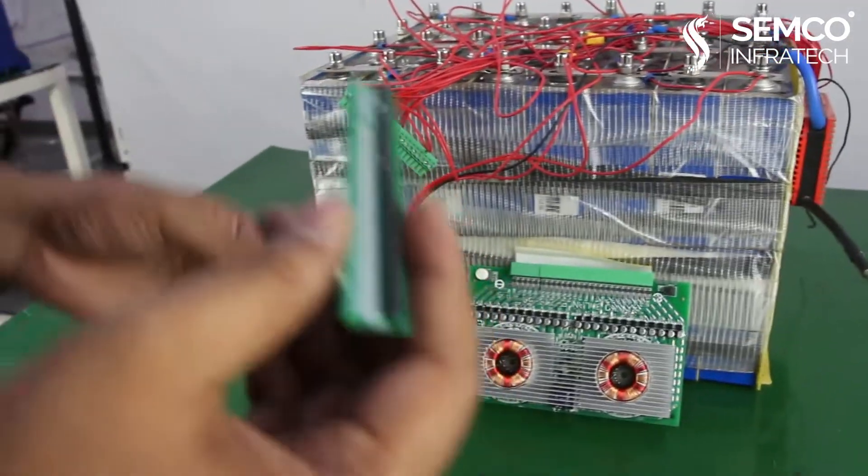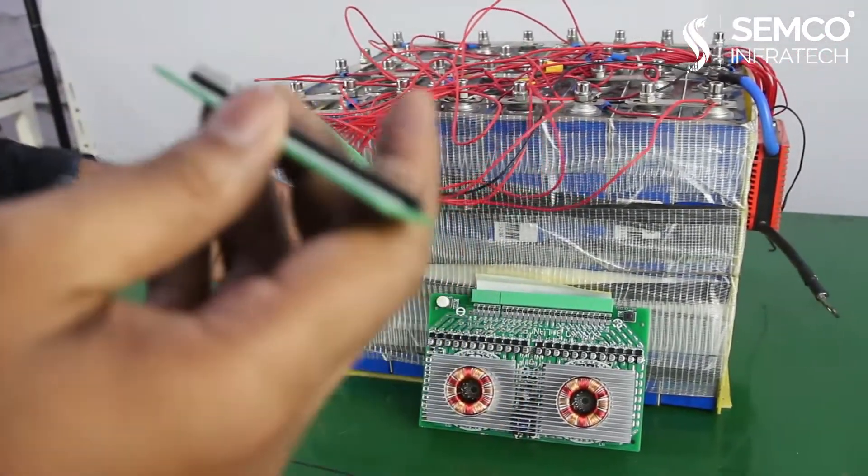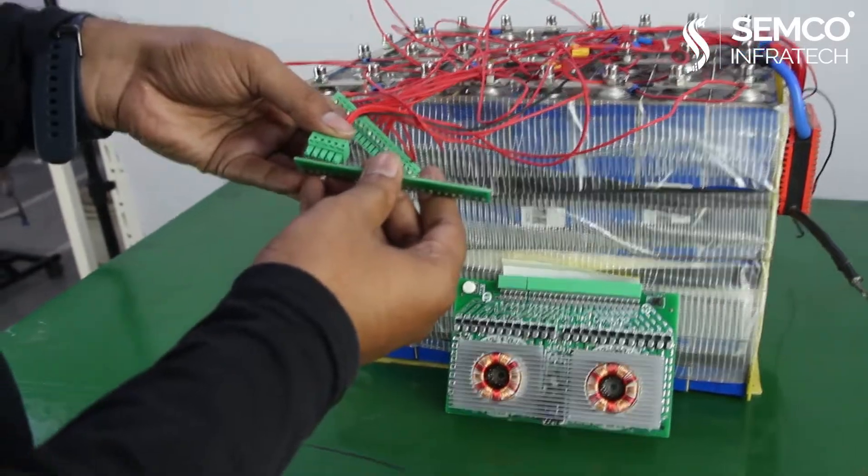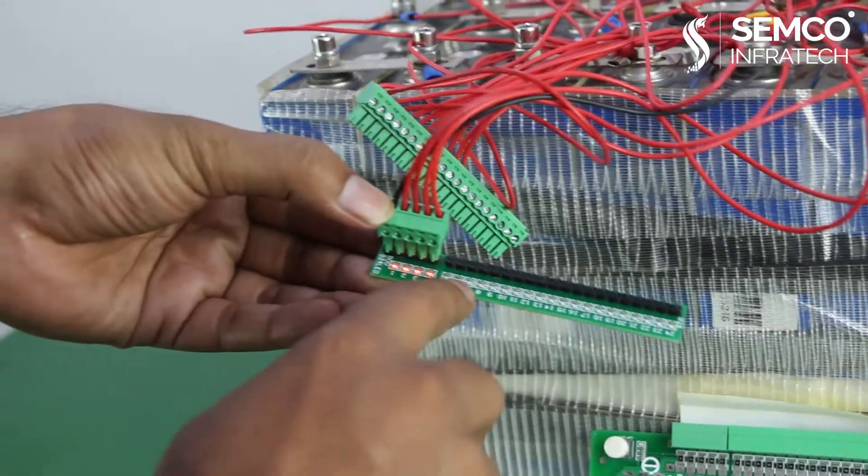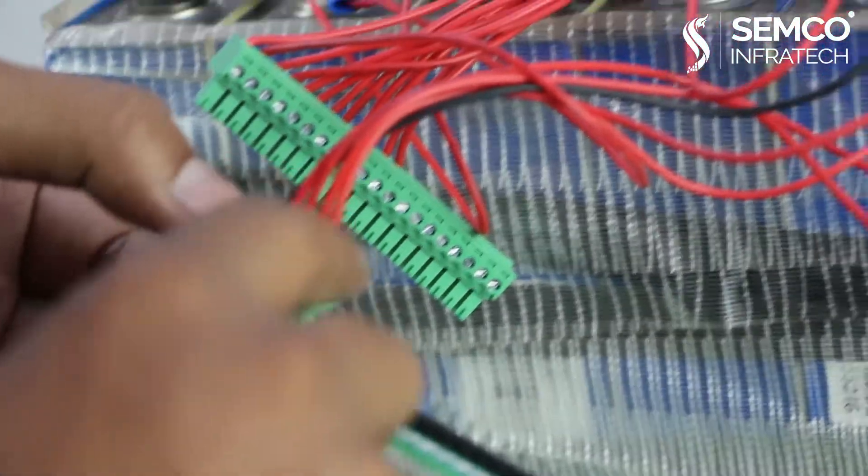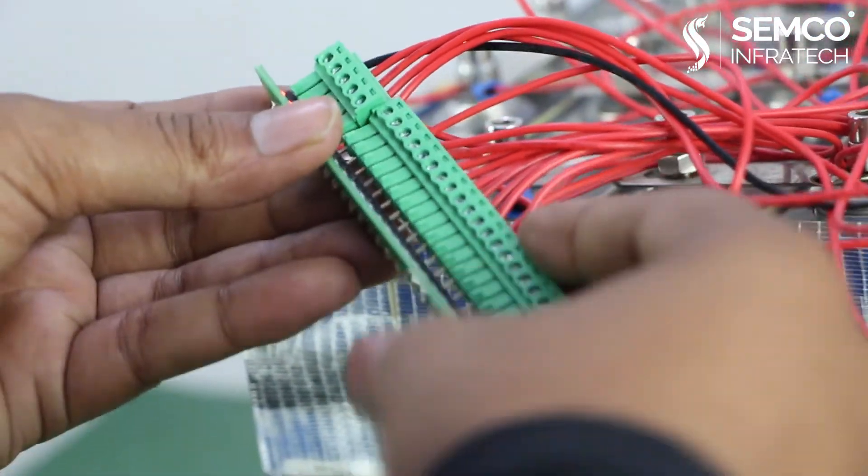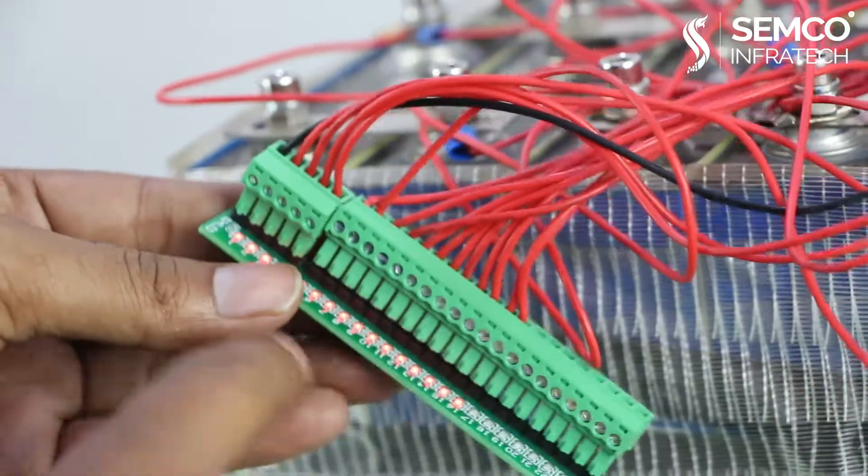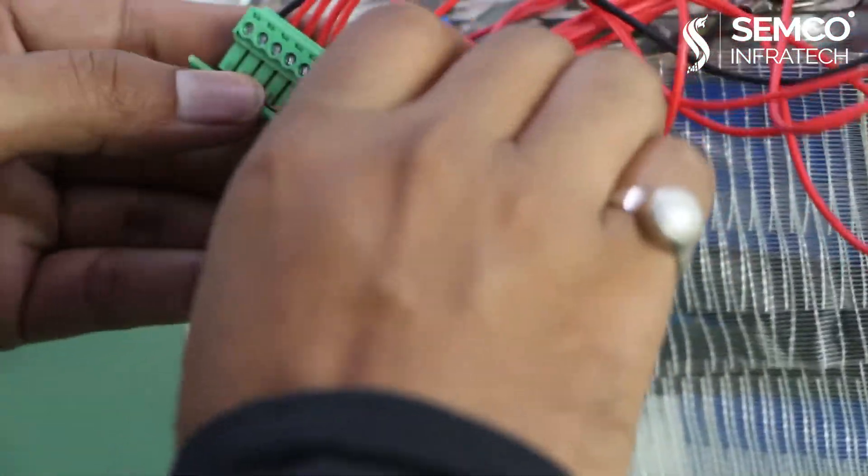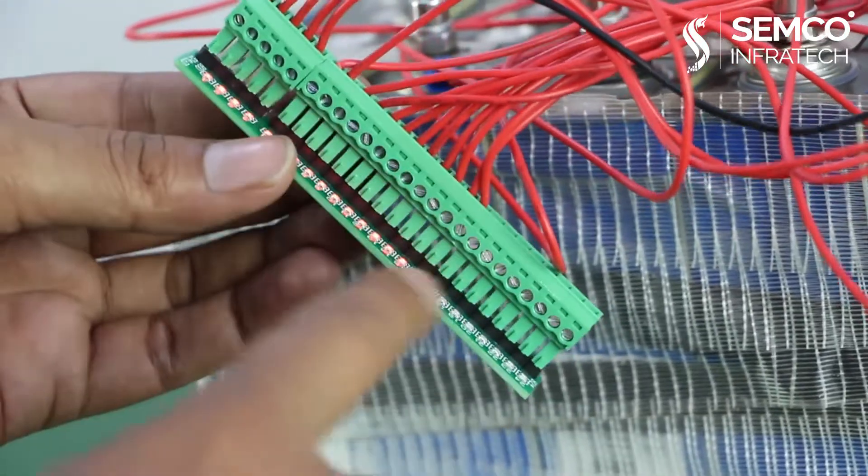Here this is the connector to check if all the connections are right or wrong. So here we connect. Four lights are blinking, so it means these four series are connected good. And then now we connect remaining. So all lights are blinking, that means all the connections and all the series are good.